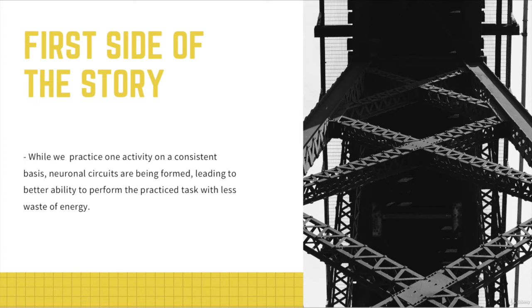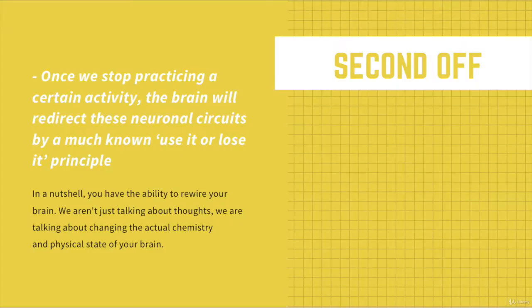Once we stop practicing a certain activity, the brain will redirect these neuronal circuits by the much-known use-it-or-lose-it principle. You have the ability to rewire your brain — not just thoughts, but the actual chemistry and physical state of your brain, not just through adaptation but through cancellation. So the concept of neuroplasticity works both ways: it creates, and it can destroy as well. During these changes, the brain would engage in synaptic pruning, deleting neural connections that are no longer necessary or useful, and strengthening the necessary ones used on a consistent basis.